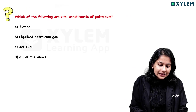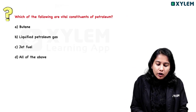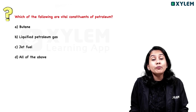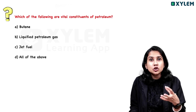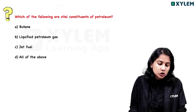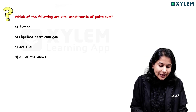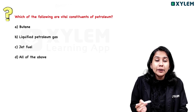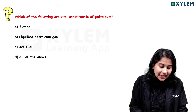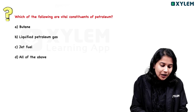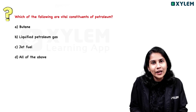Next question: Which of the following are vital constituents of petroleum? The options are: Butane and liquefied petroleum gas, Jet fuel, All of the above. The answer is all of the above — these are all vital constituents of petroleum.